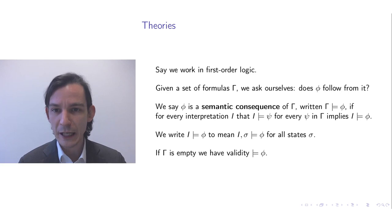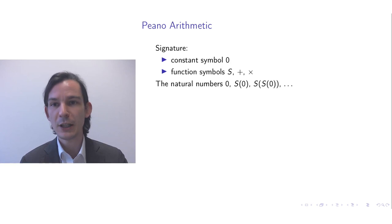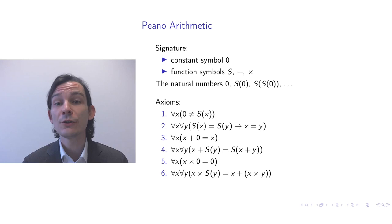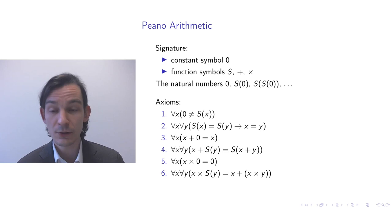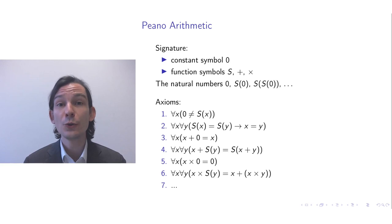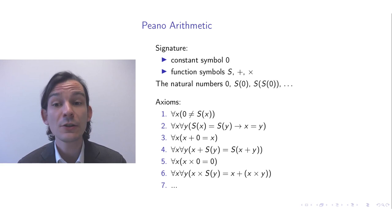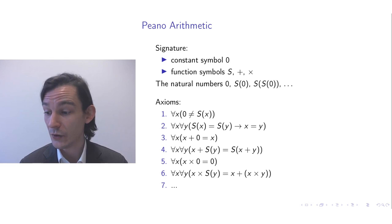Let's go back to where Peano arithmetic was introduced. In Peano arithmetic we have the following signature, consisting of a constant symbol, function symbols, and these six axioms followed by this axiom scheme. The first thing I will do in this demonstration is putting this signature and these axioms into the COQ Proof Assistant.